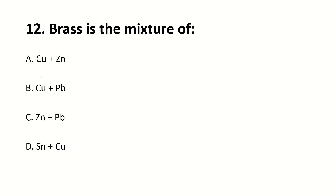Brass is a mixture of dash. The right answer is A: copper plus zinc. Now I don't remember the exact proportions, but if you remember the nickel composition or the mixture of zinc, please write it in the comments.